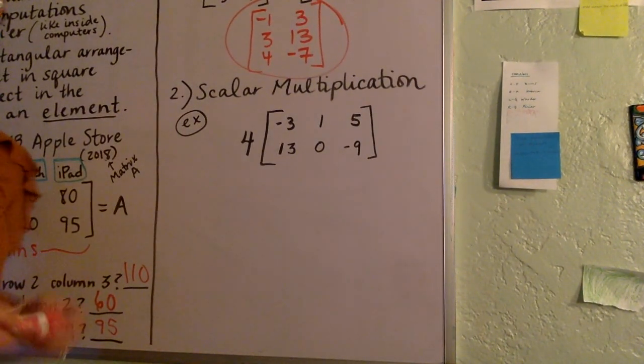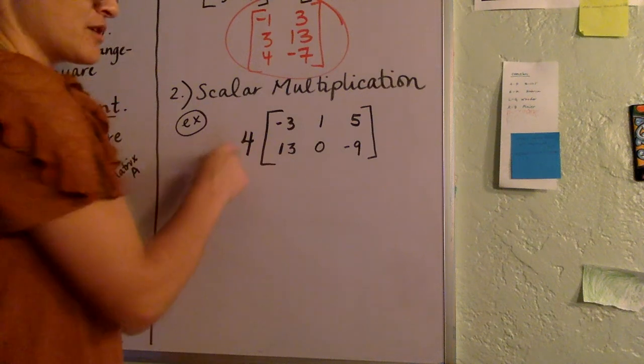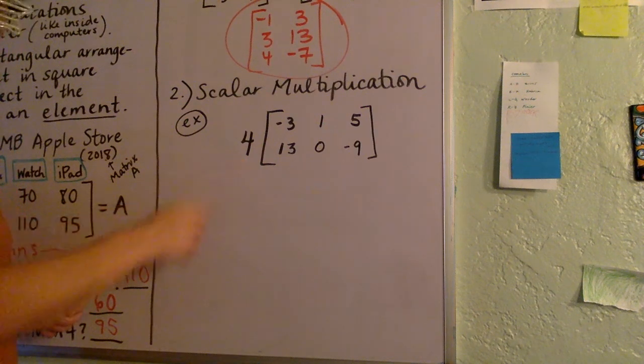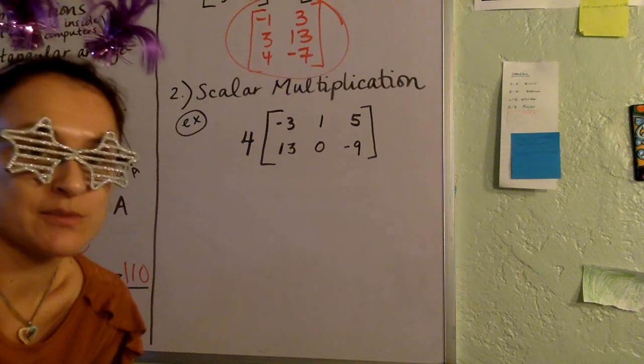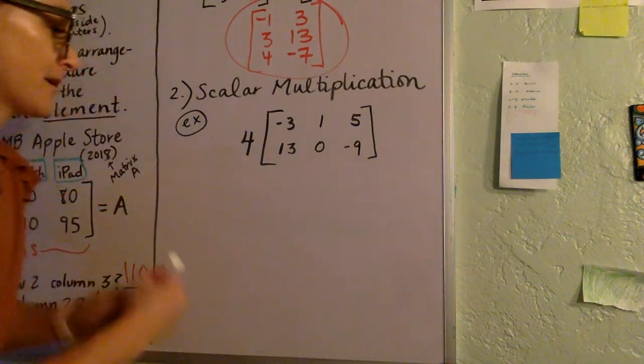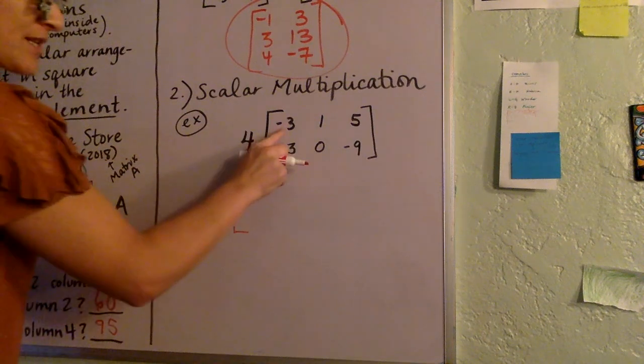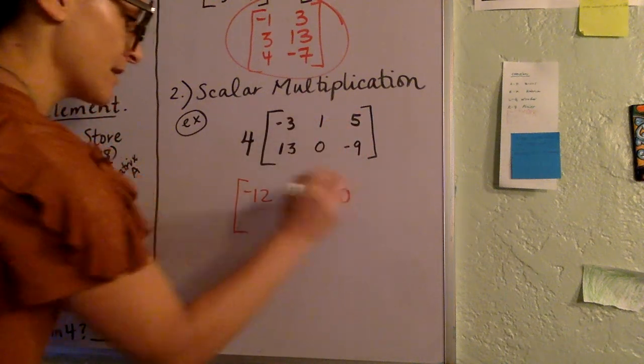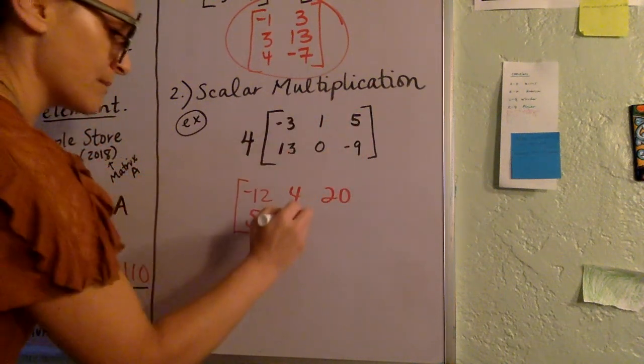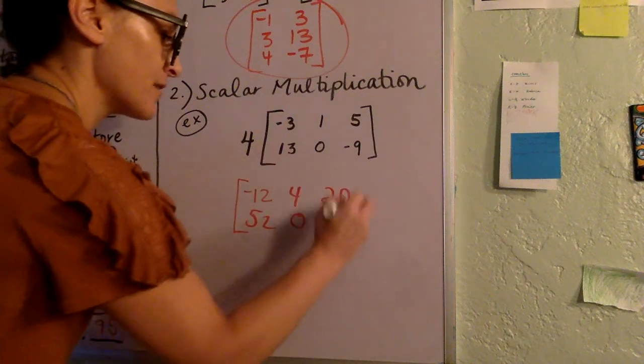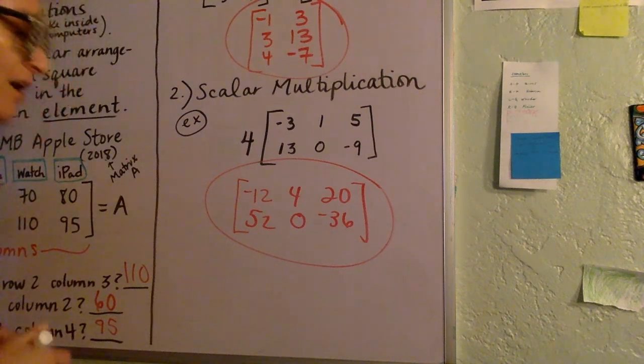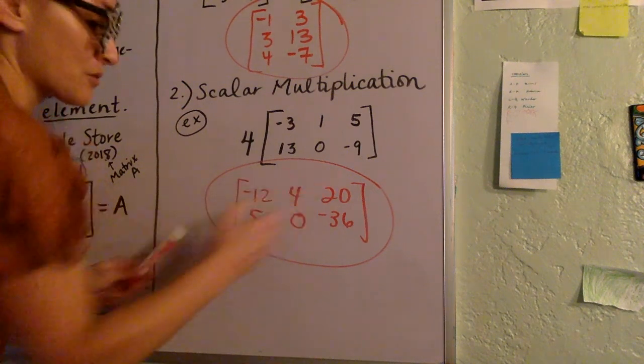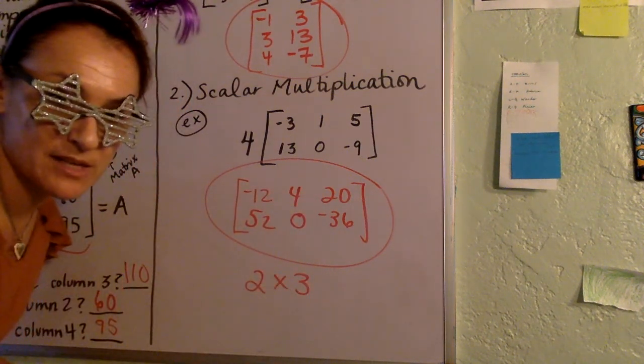Also pretty straightforward is what we call scalar multiplication. And so that's when you just have a number kind of out in front of a matrix, a multiplier, also known as a scalar. This is really straightforward. It's just like a big distribution, you need to distribute it to all the terms. So our resulting matrix here is going to be four times negative three, which is negative 12, four times one, which is four, four times five, which is 20, four times 13, which is 52, four times zero, which is zero, and four times negative nine, which is negative 36. And there's our answer. Also, let's just talk about the size of this matrix. This is a one two by one two three. We would call this a two by three matrix.